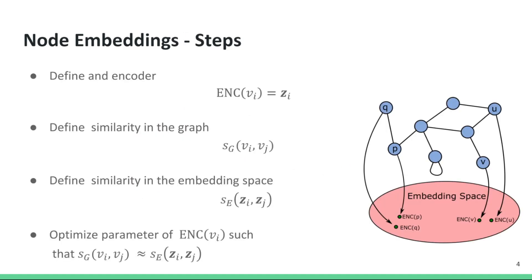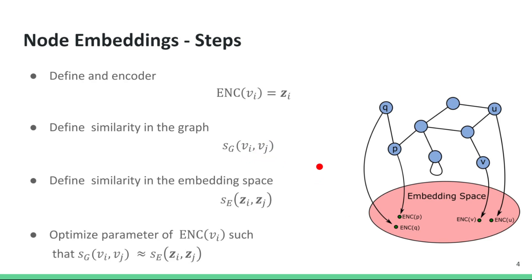So how do we compute node embeddings? First, we have to define an encoder function, which takes in as input a node and gives out a d-dimensional vector in the embedding space. Then we need to define or choose a similarity function, which takes as input two nodes, vi and vj, and gives out a scalar.